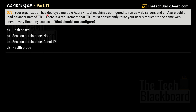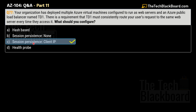Question 77 says that your organization has deployed multiple Azure Virtual Machines configured to run as web servers, and an Azure Public Load Balancer named TD1. There is a requirement that TD1 must consistently route user requests to the same web server every time they access it. What should you configure? The options are: Hash Based, Session Persistence None, Session Persistence Client IP, and Health Probe. The correct answer is Option C: Session Persistence Client IP.